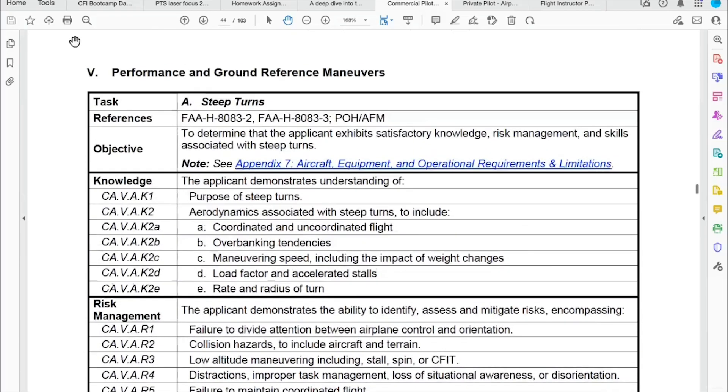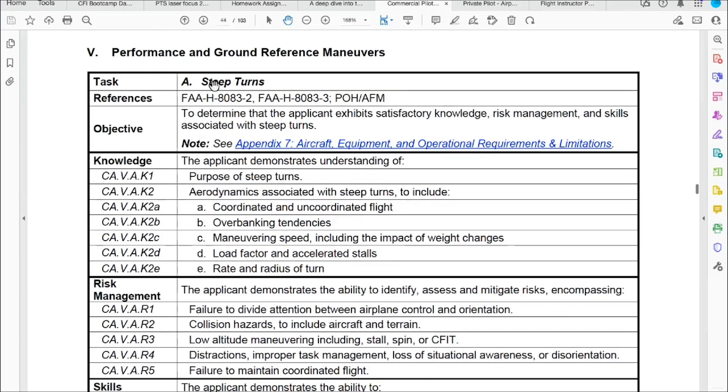Here at Area of Operation 5, Task A, these are the references. And sometimes there's something important here. If there's a note here, you need to click it. Let me show you what the note says. Let's look at the area of operation first, then we'll look at the note.